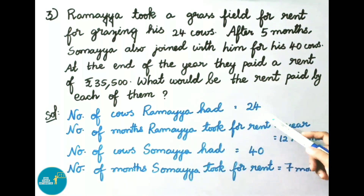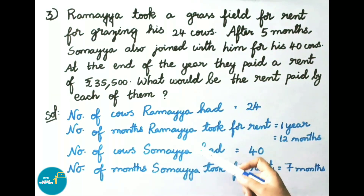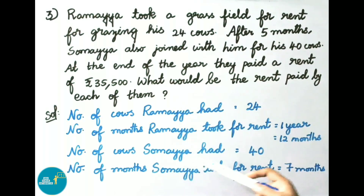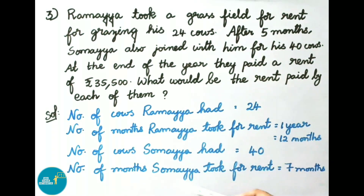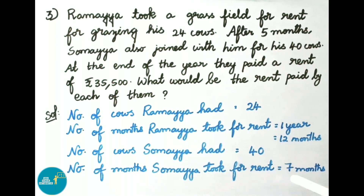Number of cows Ramaya had is 24 cows. Number of months Ramaya took for rent is 1 year, that equals to 12 months. Number of cows Somaya had is 40 cows. Somaya joined 5 months after Ramaya, so his period is 12 minus 5, that is 7 months.